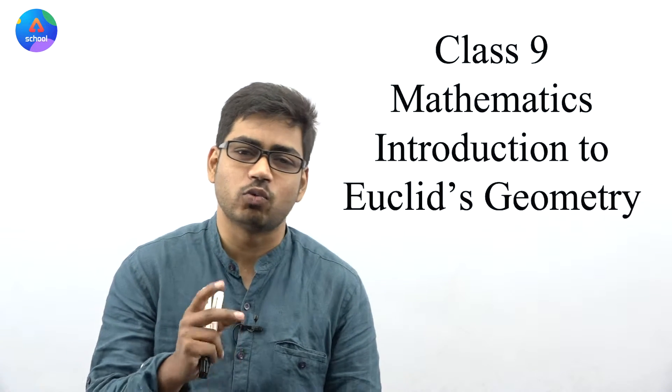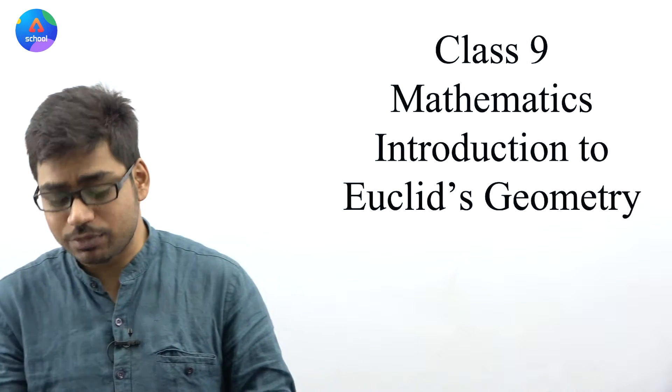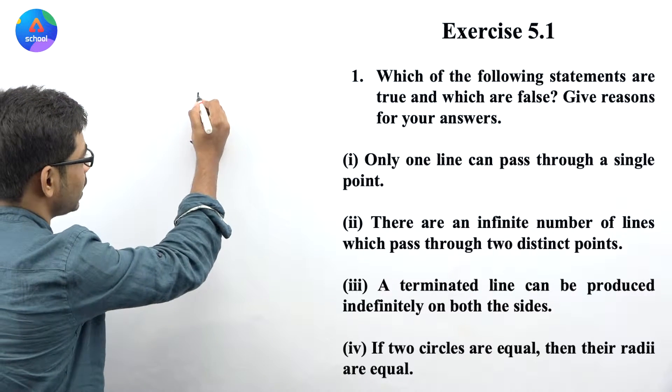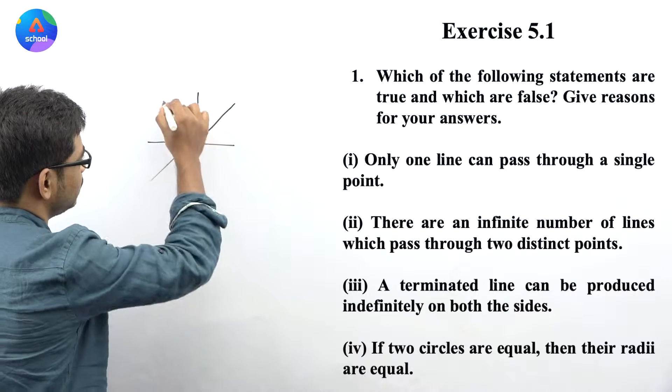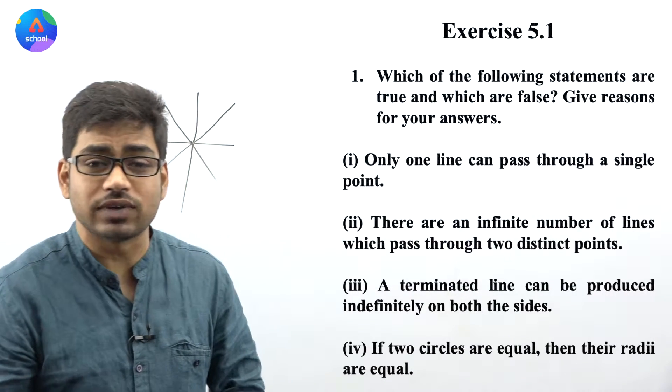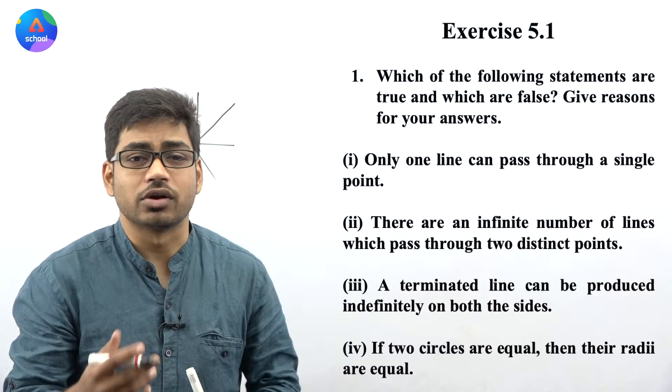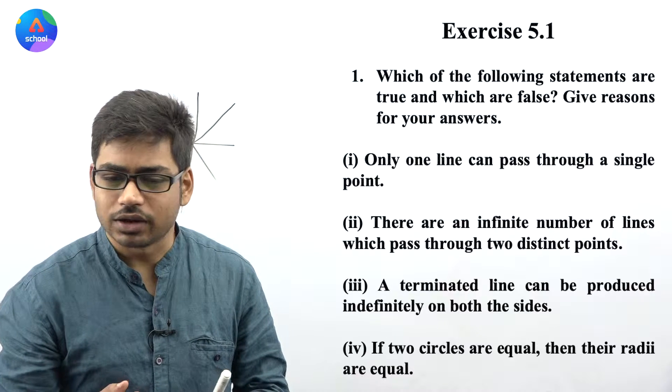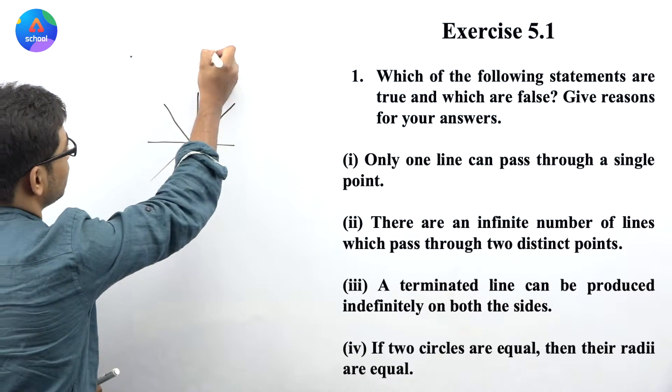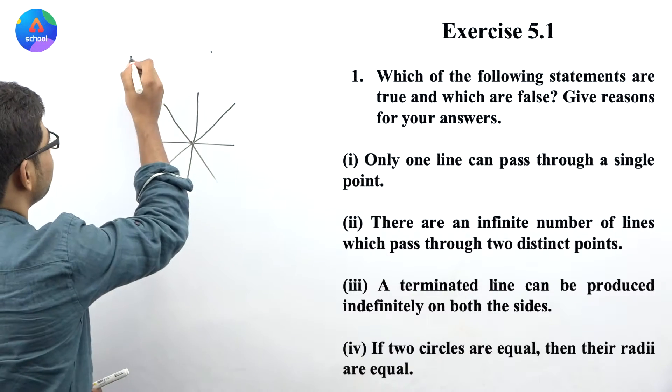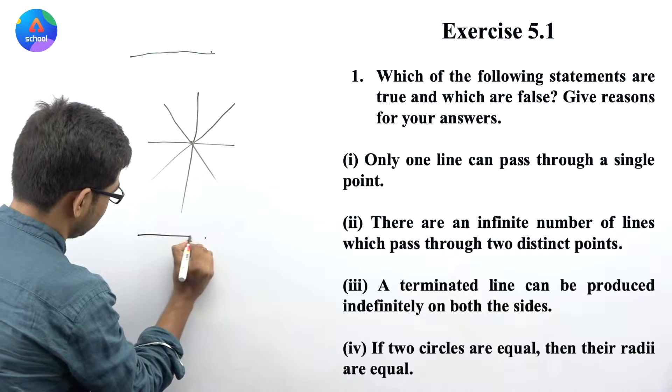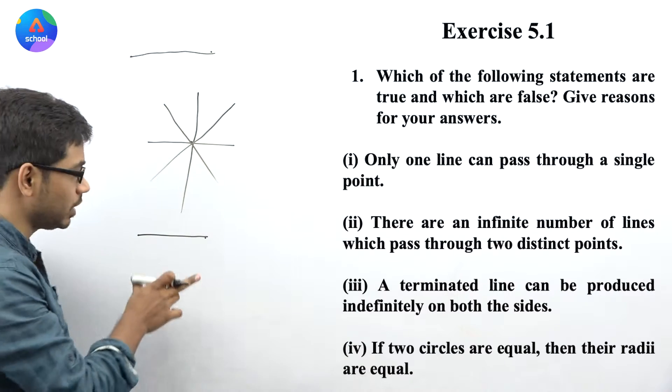So we will start with the statement: Only one line can pass through a single point. An infinite number of lines passing through a single point will be possible.